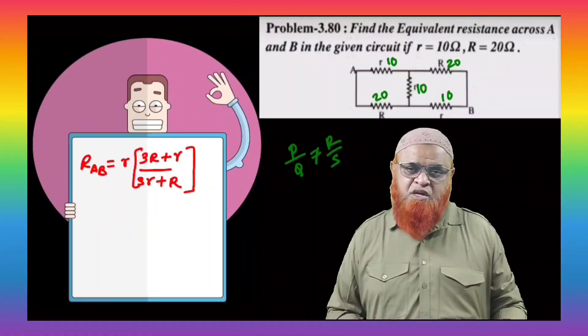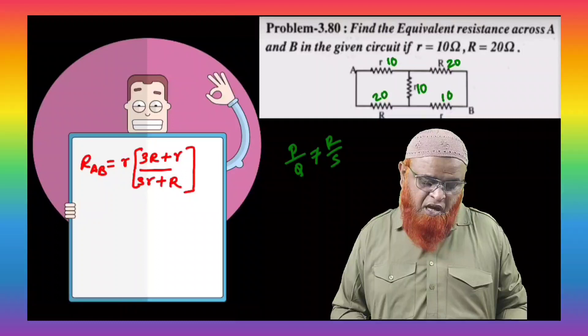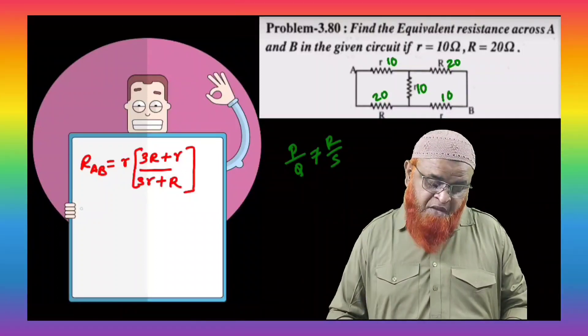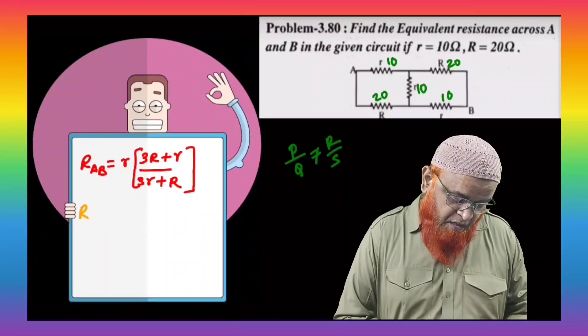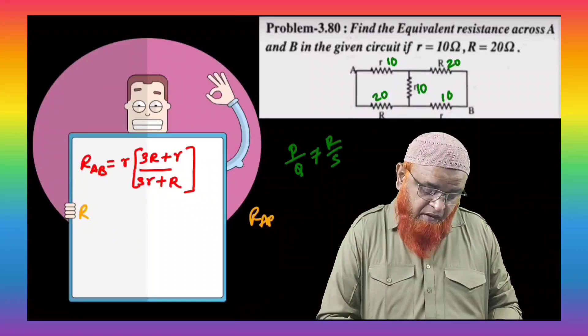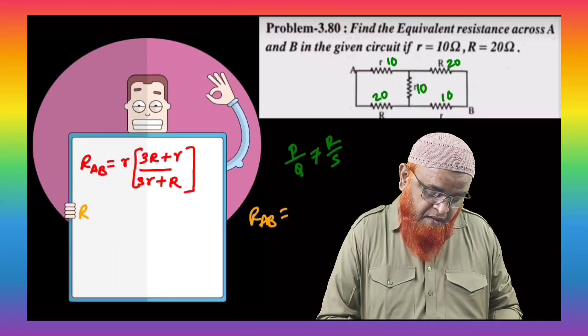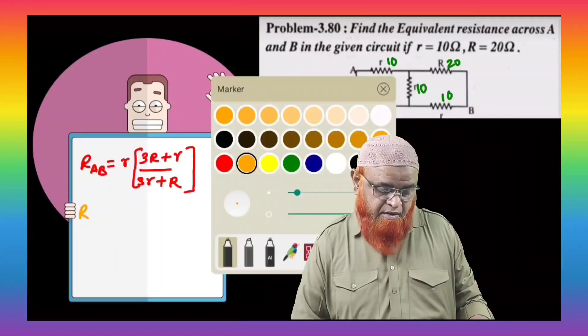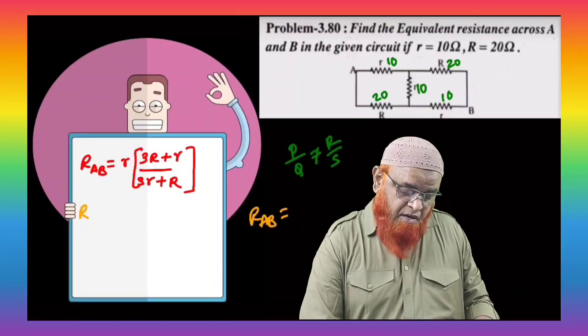Okay, so this shortcut if you use, you can solve this problem in fraction of seconds. How are you going to solve this problem? Let us see here now. So you all know that here you are going to find out RAB. So how are you going to find out RAB? By using this shortcut which is written here. So let us do that problem here now.